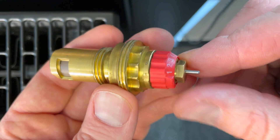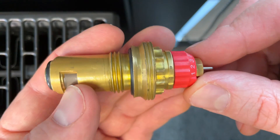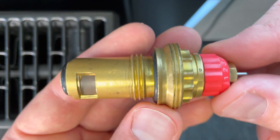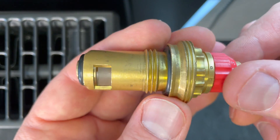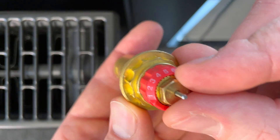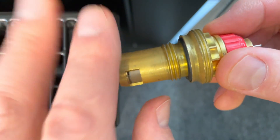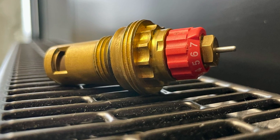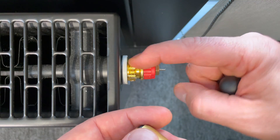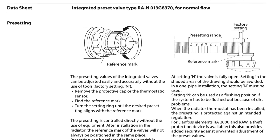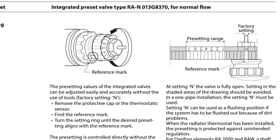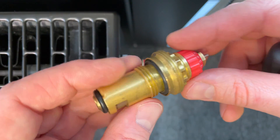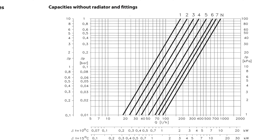Of course, too much flow is not good because you may have some noise. Too low is also not good because there will not be enough heat. So this pre-setting should be set according to your radiator capacity. Sometimes producers pre-set integrated valves from the factory; sometimes you need to do it yourself.